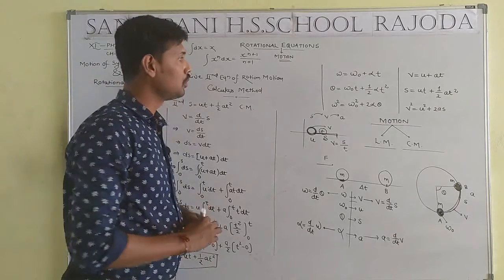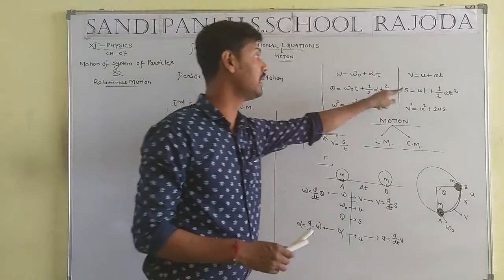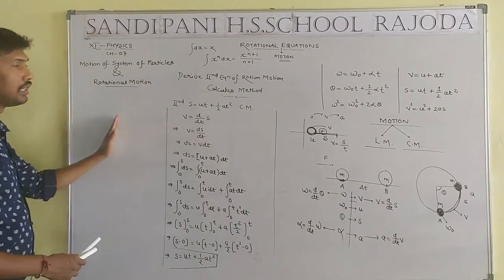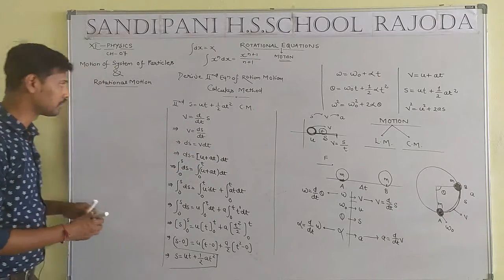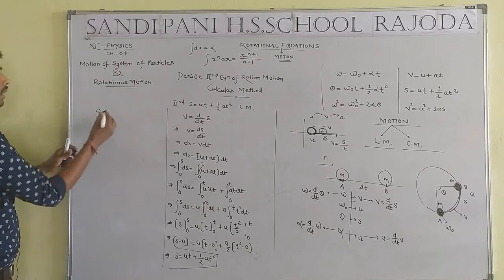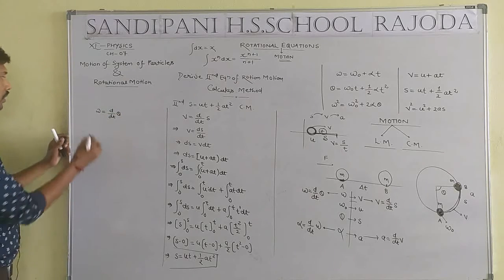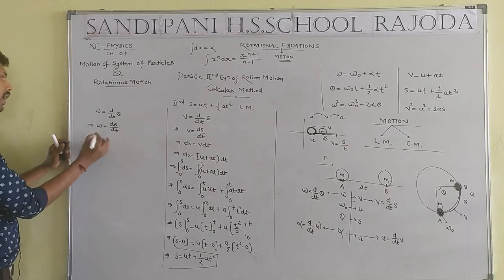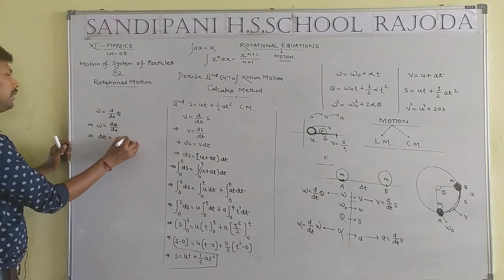Now we convert this to rotational form. In rotational motion, v is replaced by omega (ω), and displacement s is replaced by theta (θ). So, omega = dθ/dt. By cross multiplication: dθ = ω·dt.